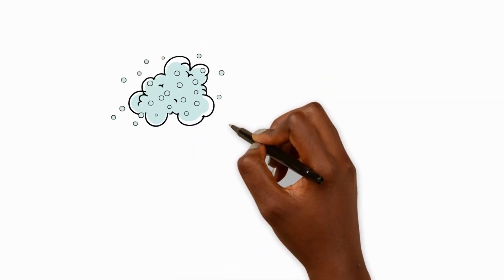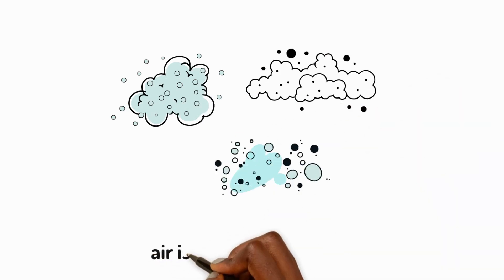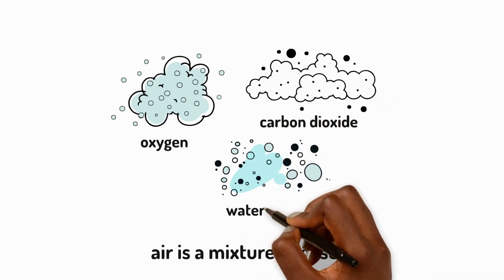Mixtures are made when we combine two or more different materials together. Air is a mixture of gases like oxygen, carbon dioxide and water vapour.